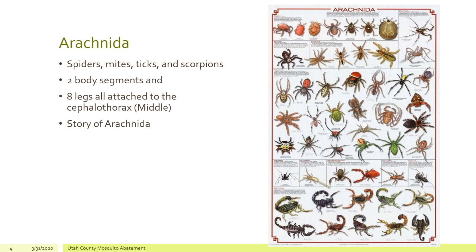Let's look at some of these arthropods more closely. One of those we'd like to look at is the arachnids. Arachnids are spiders, mites, ticks, and scorpions. They have two body segments: one is called the cephalothorax, which is the head in the middle, and then you have the abdomen. All the legs — which they have eight — are attached to that cephalothorax region, so they have four pairs of legs.